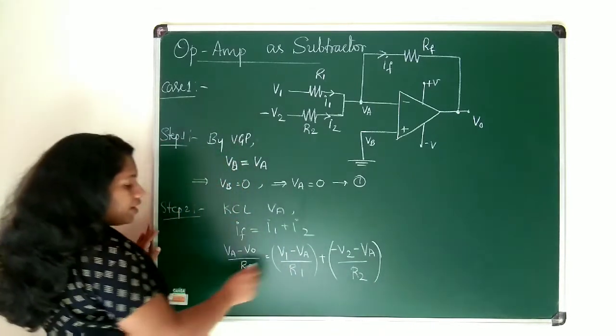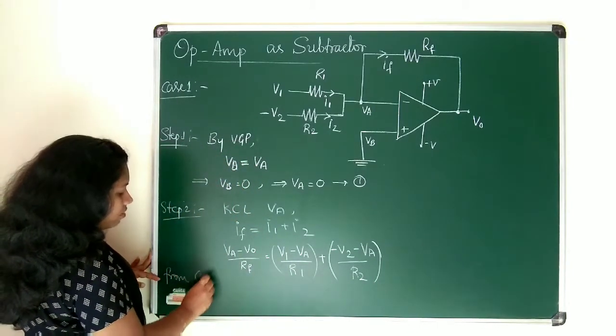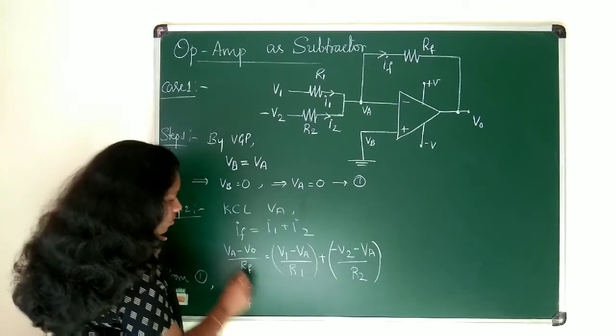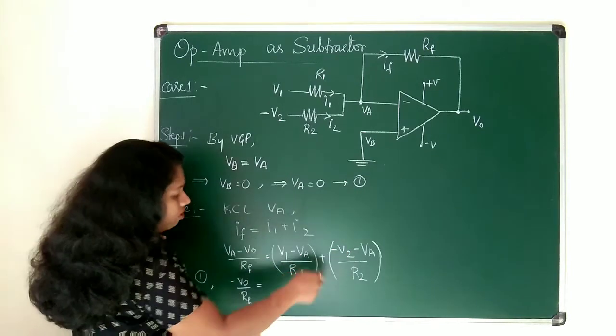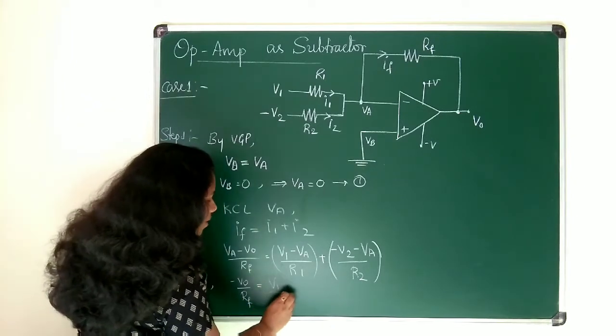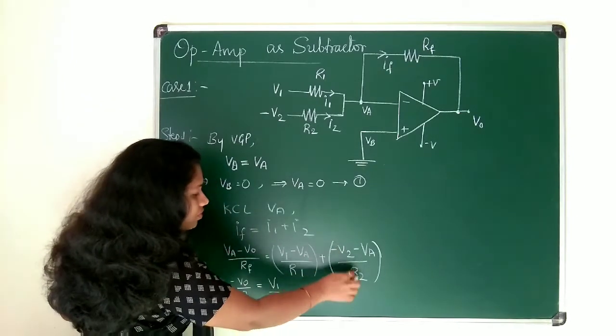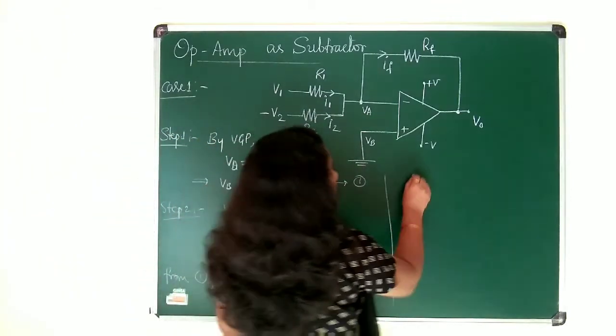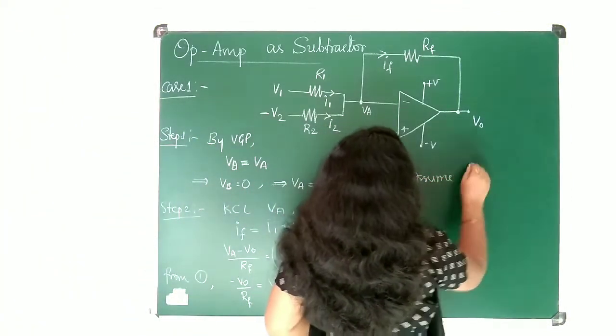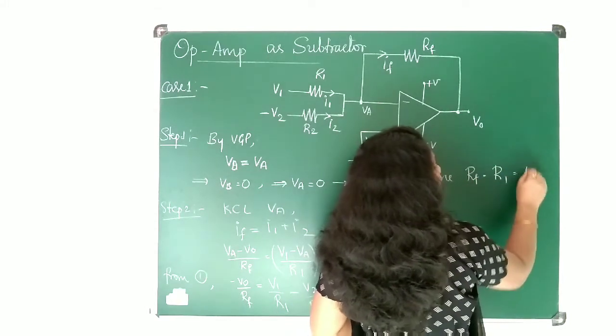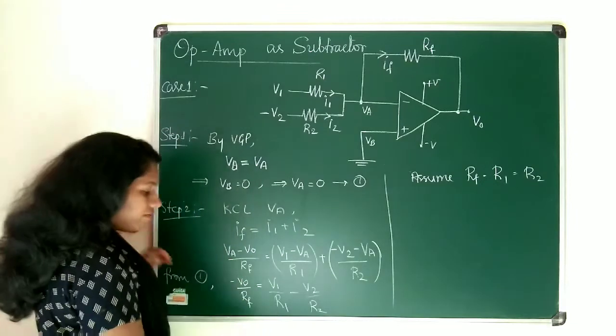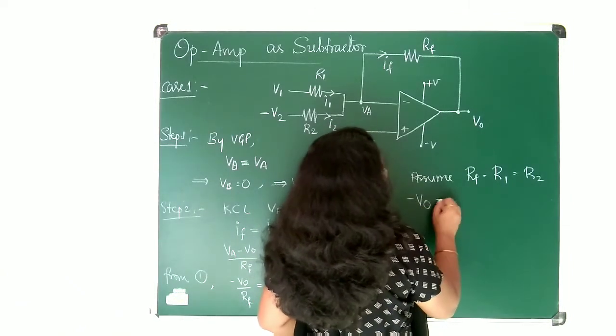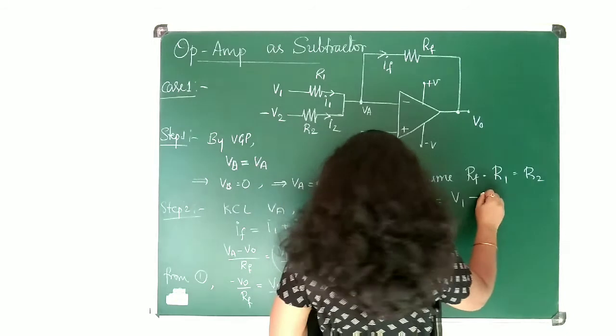So here you know that what is VA? From equation 1 I can write this equation as minus V0 divided by RF. You know that VA is 0. Then apply VA is 0 in all the terms. So here V1 by R1 and this is minus V2 divided by R2. And if you assume, if I take, assume RF is equal to R1 is equal to R2. So when you take the values of RF, R1, R2 same then what happens? This will be equals to minus V0 is equal to V1 minus V2.